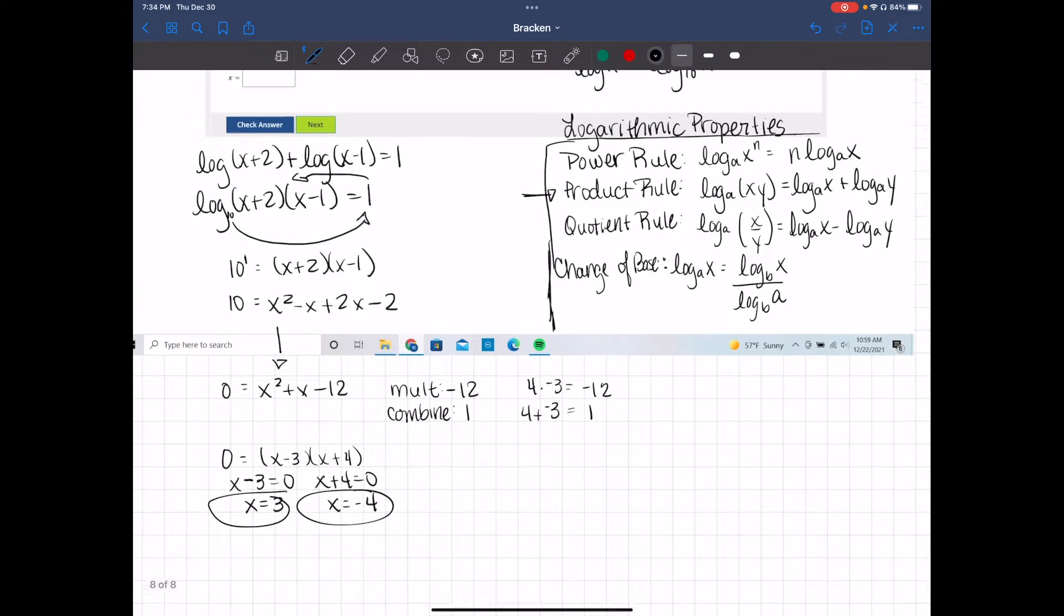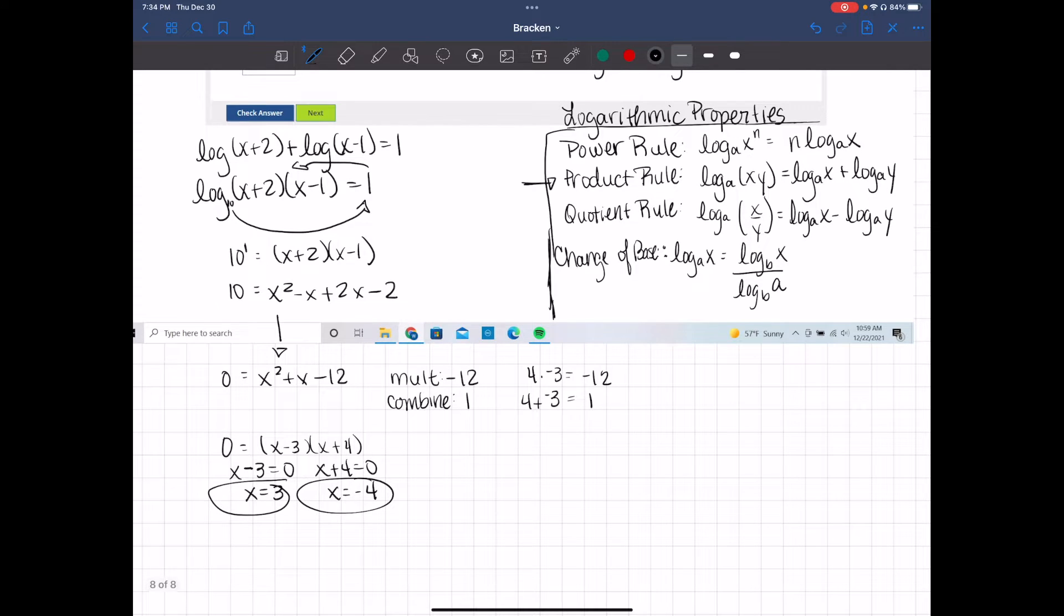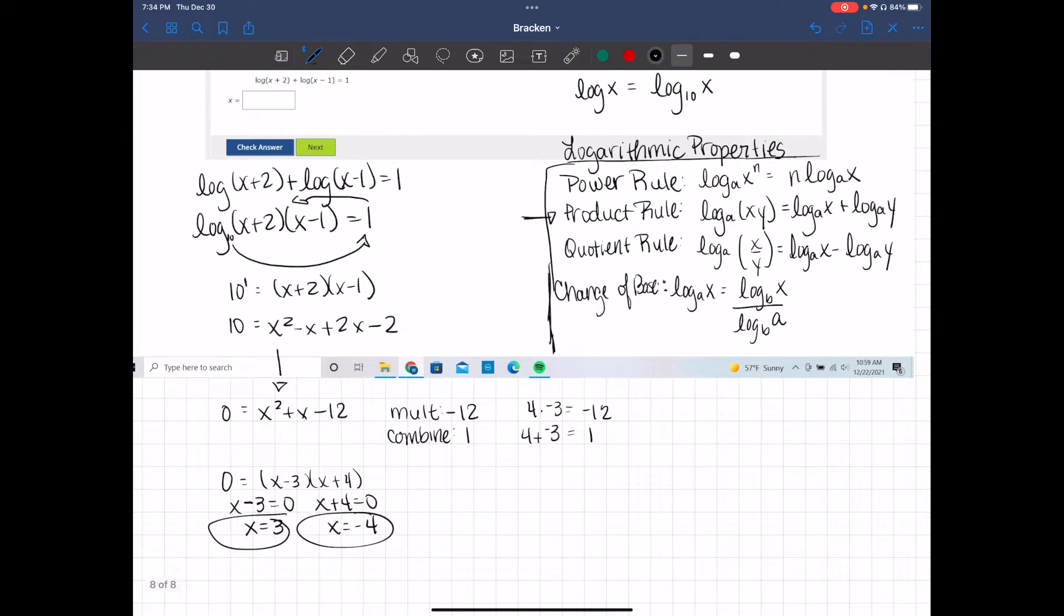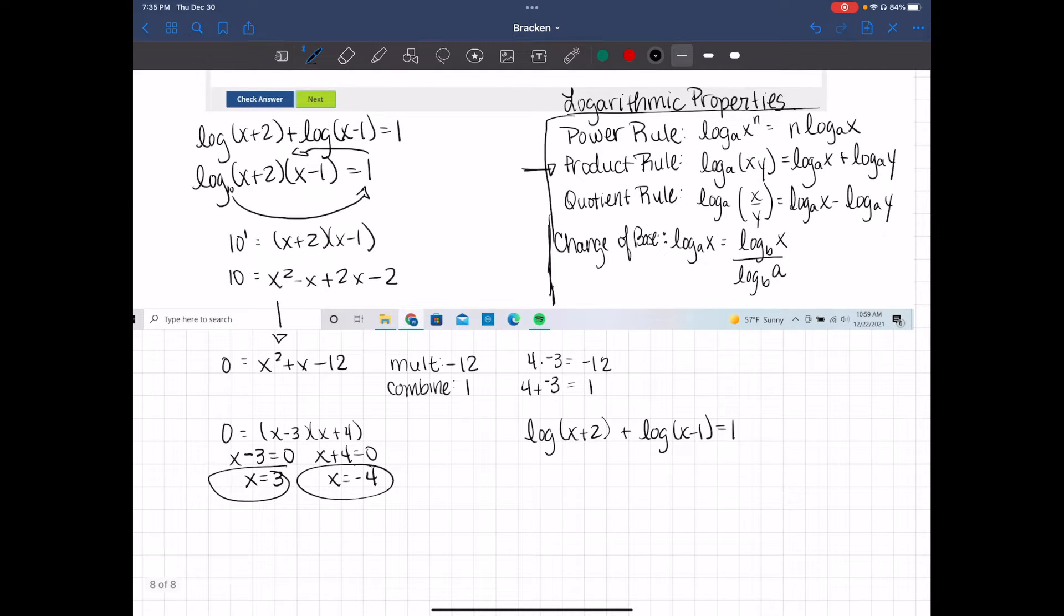But we need to check that since we're dealing with logs. So I'm going to take my original problem. And I've got log of x plus 2 plus log of x minus 1 should equal 1. That's going to give me, if I use a positive 3, I have log of 5 plus log of 2 is supposed to equal 1.